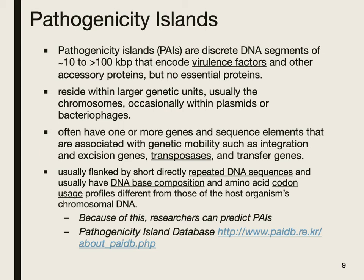In some cases, pathogenicity islands can be found in plasmids or bacteriophage. When looking at pathogenicity islands, they are flanked by repeated DNA sequences. Also, their base pair composition is different from the rest of the chromosomal DNA — the GC ratios are unique to the pathogenicity islands. Looking at the flanking regions, the GC ratio differs from what we'd normally see in the rest of the chromosome, indicating a pathogenicity island. Additionally, the amino acid codon usage pattern is usually unique to pathogenicity islands, which allows researchers to look at a genome and predict whether pathogenicity islands are present.